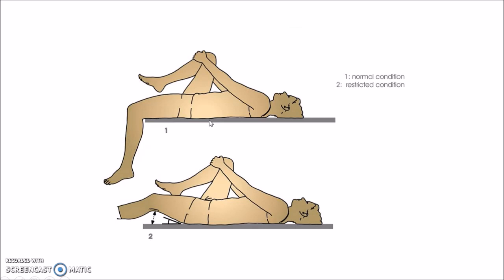This picture shows Thomas test. As you can see, the patient lies supine on the examination table. The unaffected hip is flexed. In normal patients, there won't be any angle between the patient's thigh and the examination table.